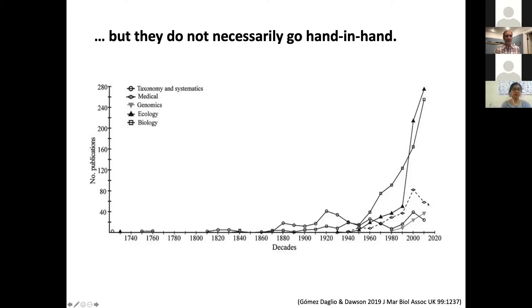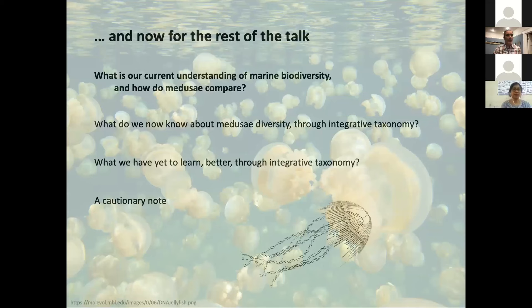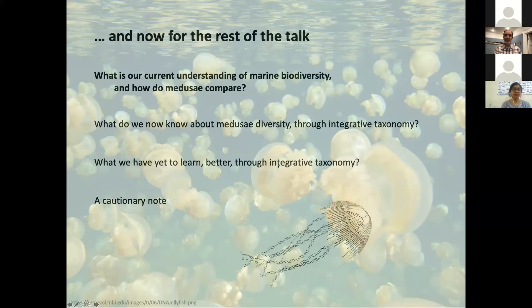So while one might imagine that integrative taxonomy represents a time of opportunity, it also looks like it might be a time of threat — taxonomy and systematics seems to be declining in favor while all these potential areas of research that could contribute to an integrative taxonomy are taking off. This is something I want to come back to at the end of the talk. Between that cautionary note and this introduction, I'd like to briefly address three questions.